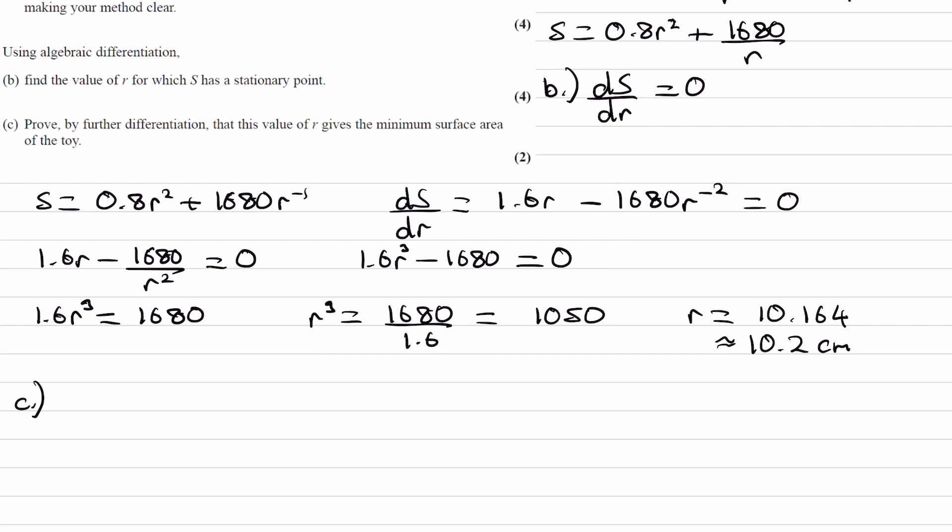And finally for part c, prove by further differentiation that this value of r gives the minimum surface area of the toy. Okay, so to find the nature of the turning point, to show that it is a minimum, we have to double differentiate.